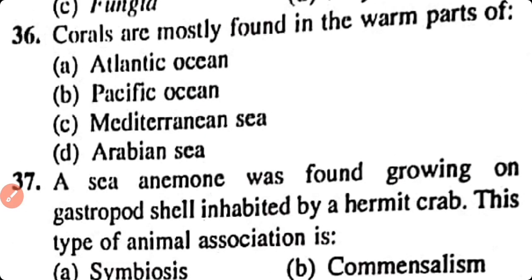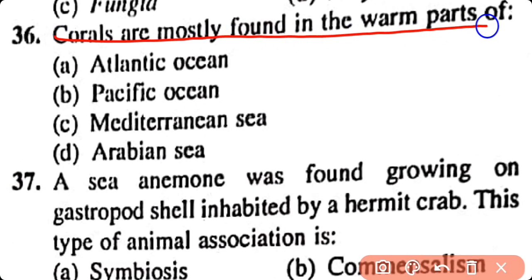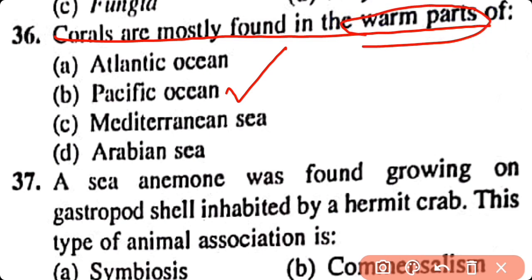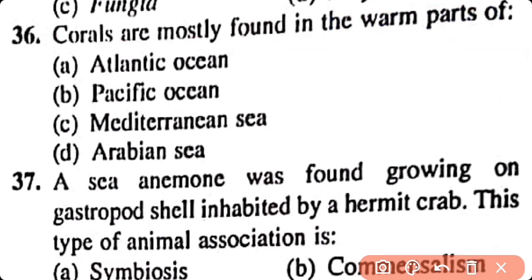Question number 36. Corals are mostly found in the warm parts of: Atlantic Ocean, Pacific Ocean, Mediterranean Sea, Arabian Sea. Option B. Corals are found in the warm parts of the Pacific Ocean.